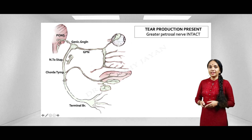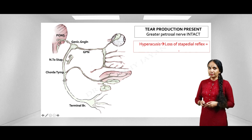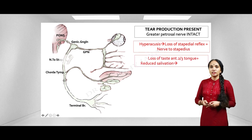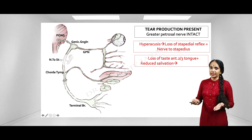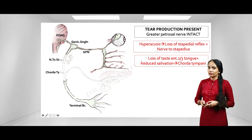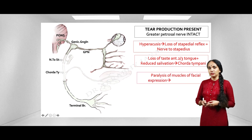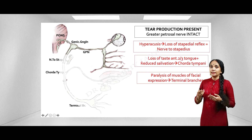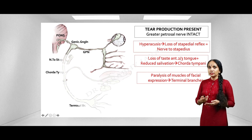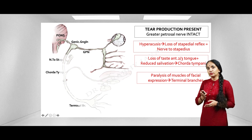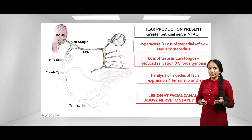Case 2: The patient has intact greater petrosal nerve — evidenced by normal tear production — but has hyperacusis, meaning the nerve to stapedius is lost. There is also loss of taste and reduced salivation — chorda tympani is gone — and paralysis of muscles of facial expression. Since the greater petrosal nerve is intact but the nerve to stapedius is lost, the lesion is in the facial canal above the nerve to stapedius.